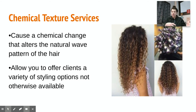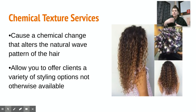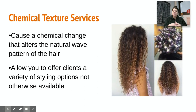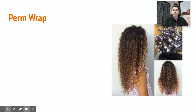A chemical texture service causes a chemical change that ultimately alters the natural wave pattern of the hair. For instance, if somebody wants a perm, you're going from straight to curly. If you're doing a relaxer, you're going curly to straight. It allows you to offer clients a variety of styling options which otherwise may not be available to them without chemicals.